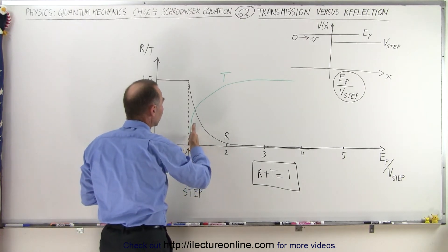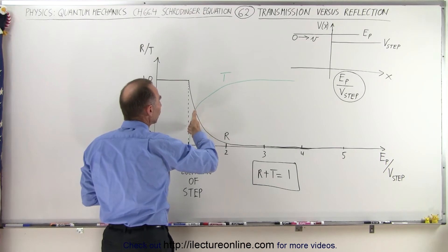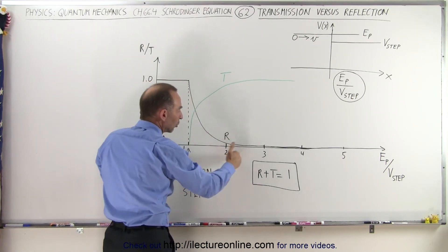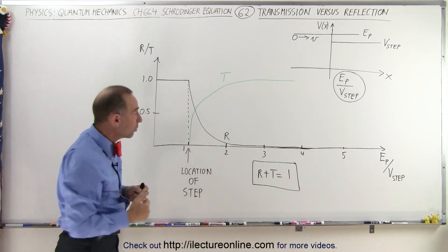We see that there's a certain percentage of them which will be reflected and a certain percentage of them will be transmitted. As the ratio of energy of particle to the potential of the barrier increases, you can see that a greater and greater percent of the particles will actually get transmitted.